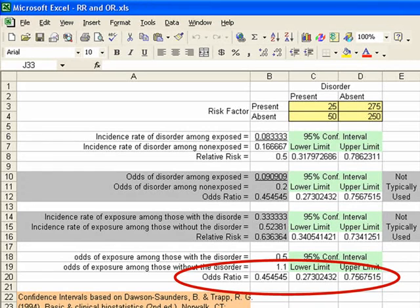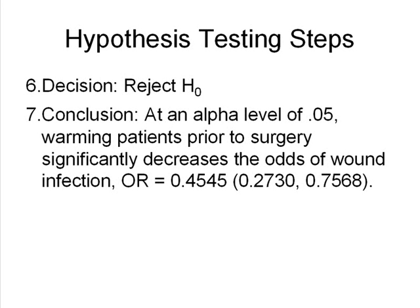So we're going to complete our steps. Step six: we've decided to reject H0. Step seven, our conclusion: at an alpha level of 0.05, warming patients prior to surgery significantly decreases the odds of wound infection. Here we put OR — capital O followed by capital R, no periods — space, equals, space, then our best guess (point estimate) 0.4545. Then our 95% interval estimate in parentheses: lower limit 0.2730, comma, space, upper limit 0.7568, end parenthesis. When reading an article, you look at what's in parentheses to see whether or not it was significant.